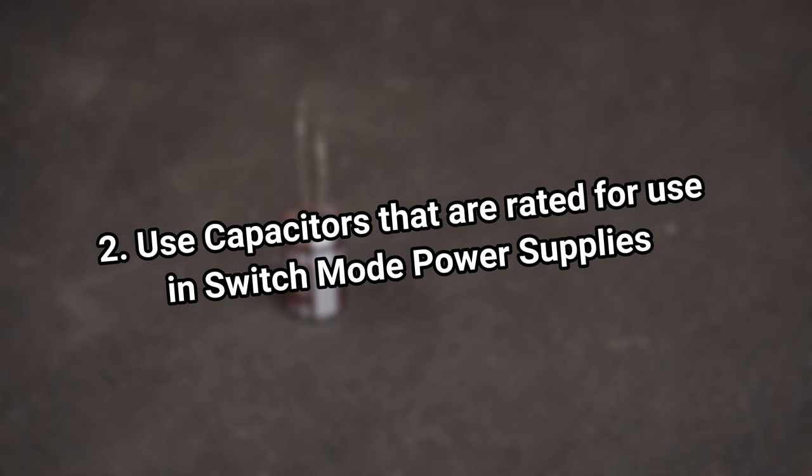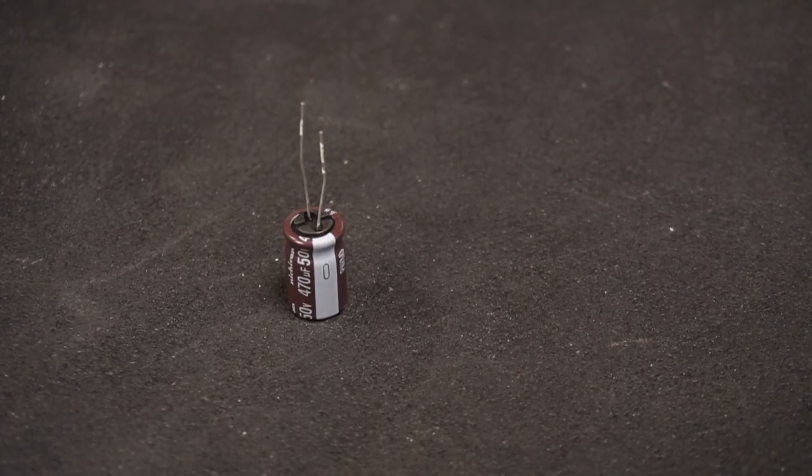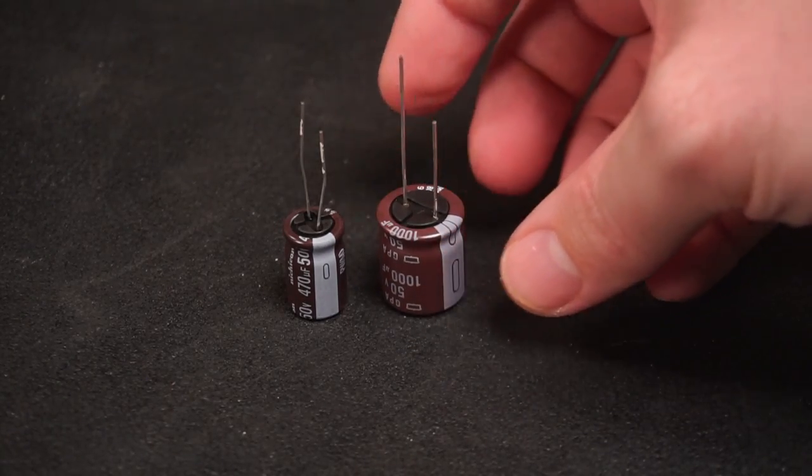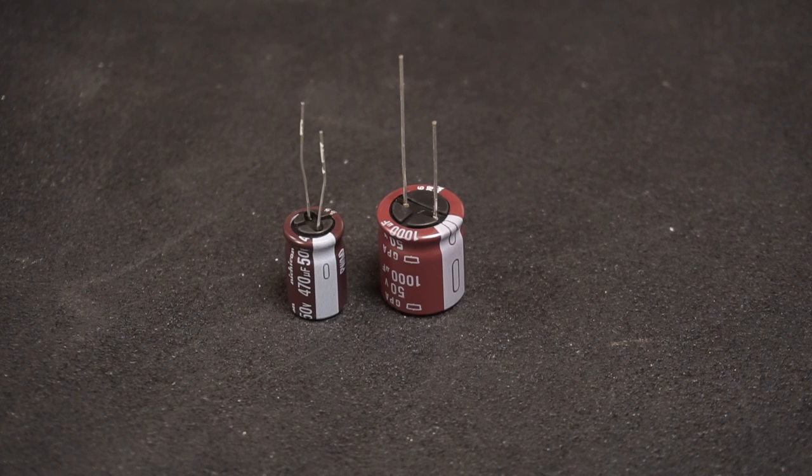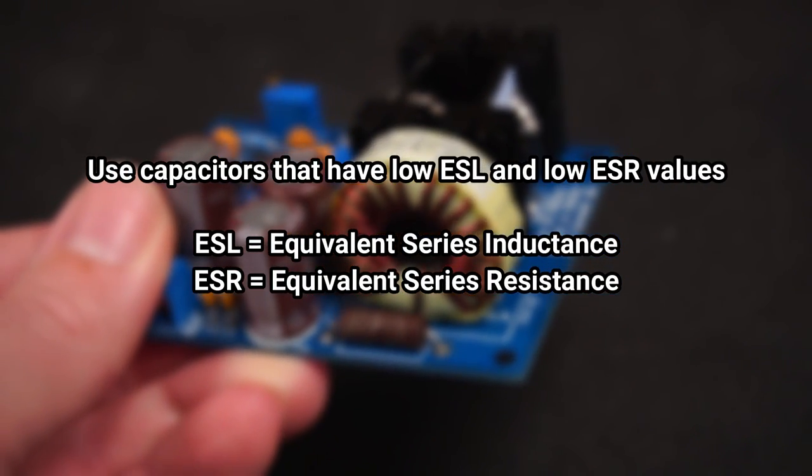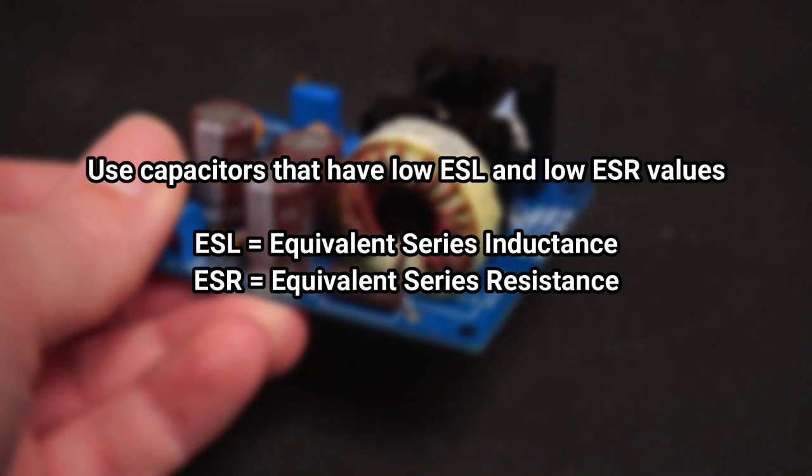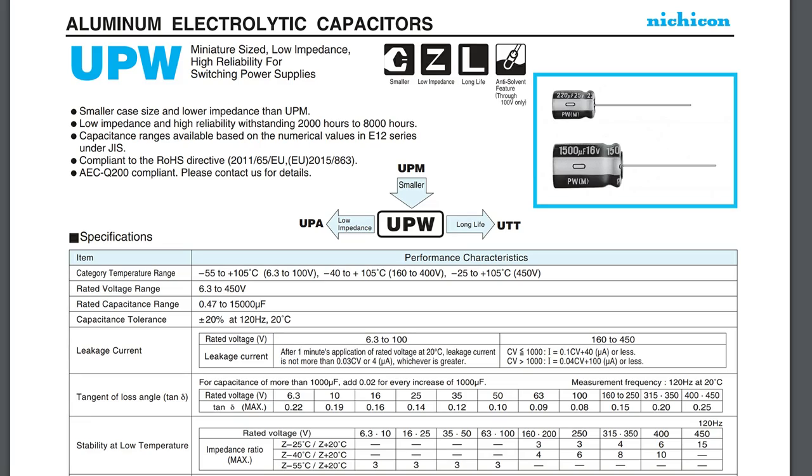Tip 2: Use capacitors that are rated for use in switch mode power supplies. The majority of capacitors even quality name brand ones aren't necessarily designed with the intention of being used in high switching frequency applications. Make sure you use a capacitor that has low ESL and low ESR values. Some manufacturers like Nichicon mention in their product datasheets what applications their products are most suited for.